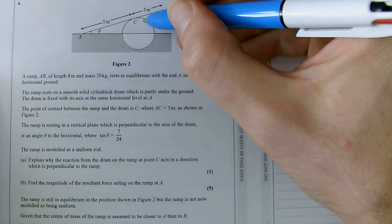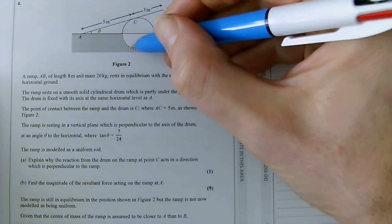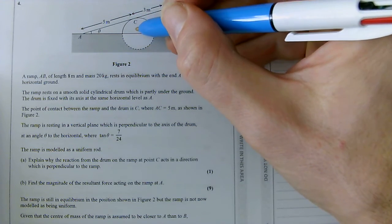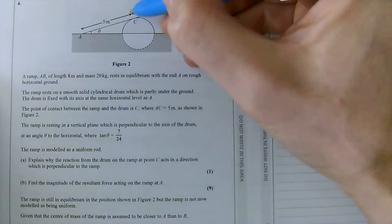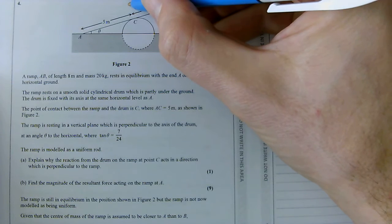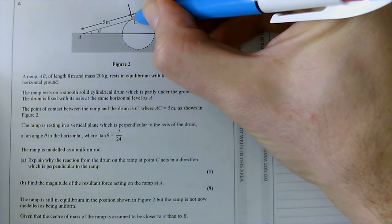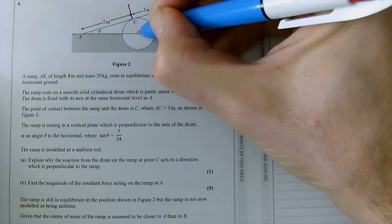Once we've read the question we should realize that this drum is completely smooth. Remember that if a drum is smooth, or if any surface is smooth, it means that the reaction force that you can get from it is always perpendicular to its surface.